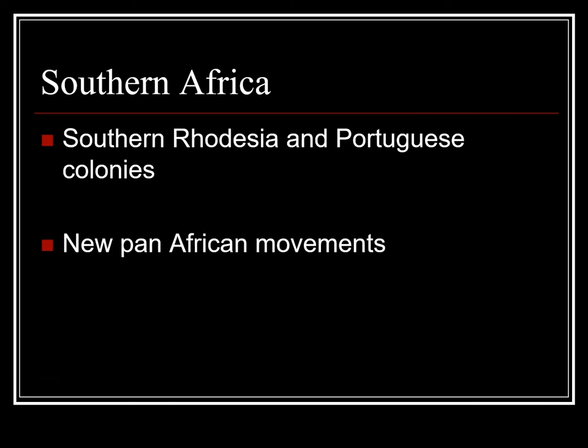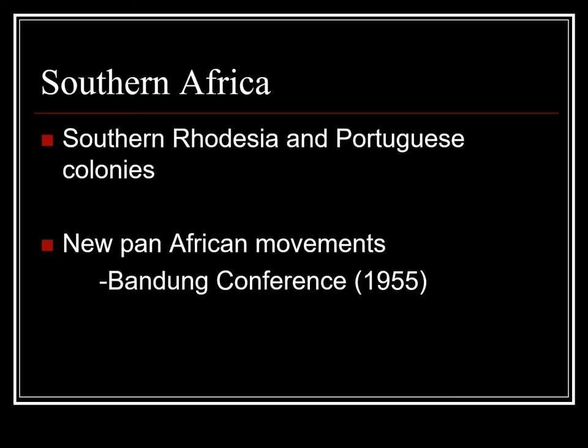There were several pan-African movements that also developed in the years after World War II. They hoped to solve problems among African countries without outside interference, and as a united front, have more clout in determining world affairs. An example was the Bandung Conference in 1955, which accomplished a vote declaring Africa as non-aligned in the Cold War, but not much else was agreed on. Another was the Organization of African Unity, formed in Ethiopia in 1963, with similar results. The African Union developed from it and has been much more successful, particularly since it changed its policy of non-interference.